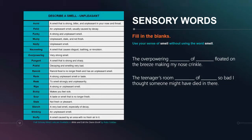'The teenager's room — [blank] of [blank] so bad I thought someone might have died in there.' I'm sure we can all relate to that if we've dealt with teenagers, especially teenage boys. It could be a sour stench that smells of rotting eggs, food going bad on the end table, something nasty and stinky — pungent odors. We can fill in the blanks with some of these nasty words and make that sentence really pop. That's what we're trying to do here.